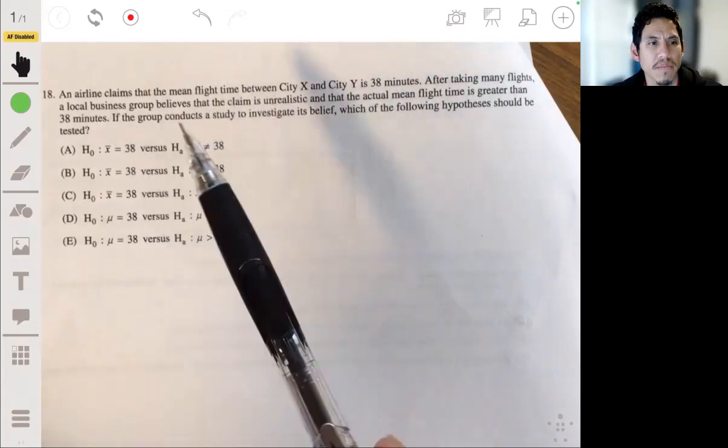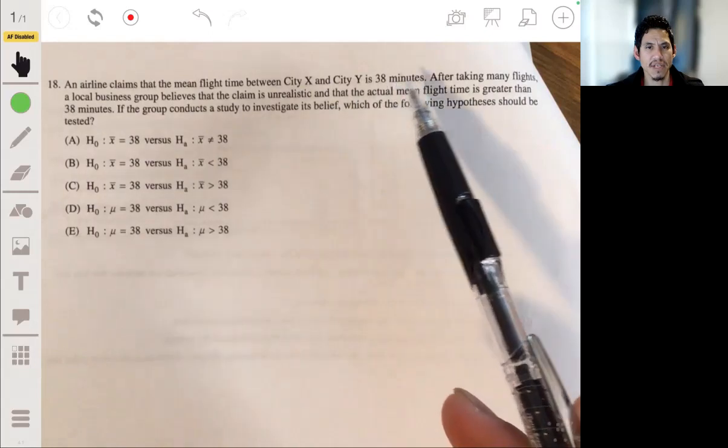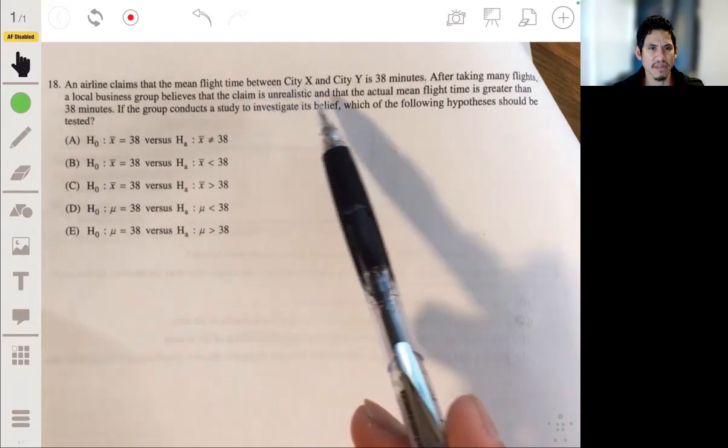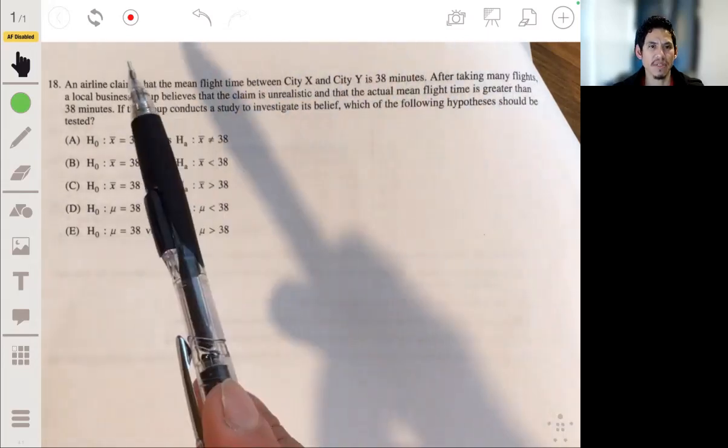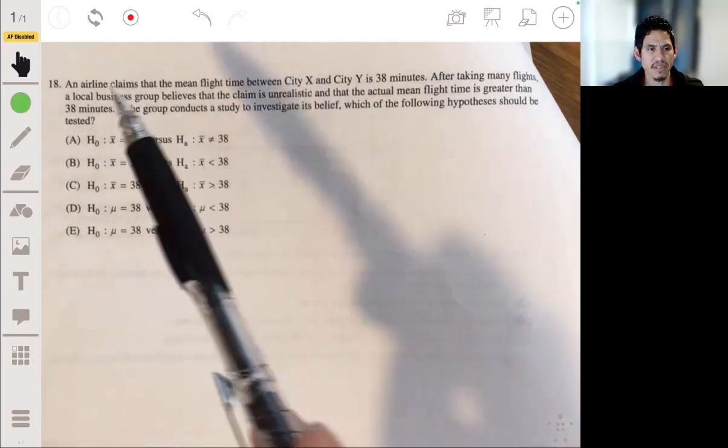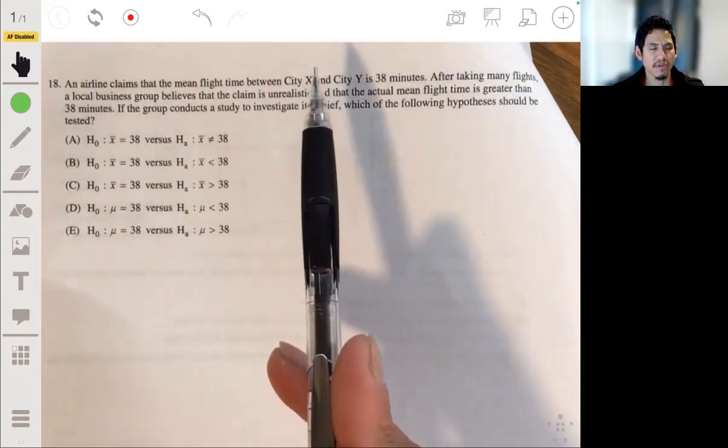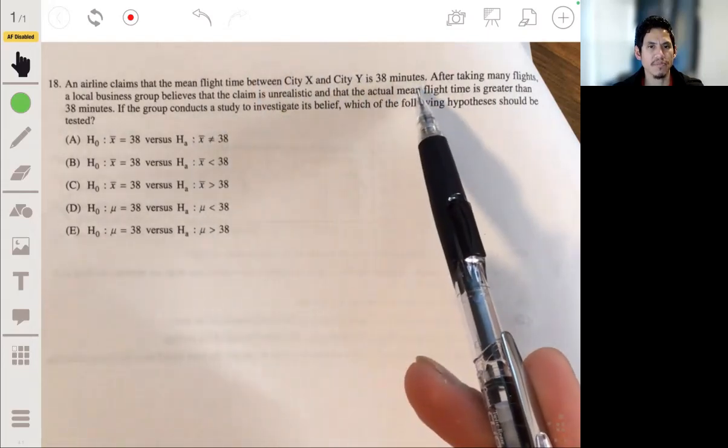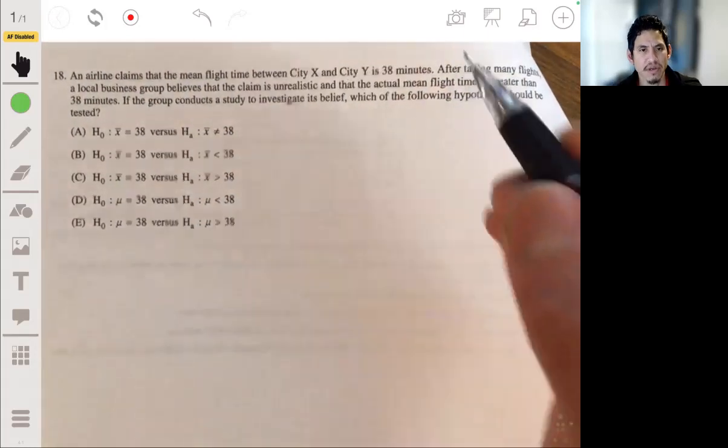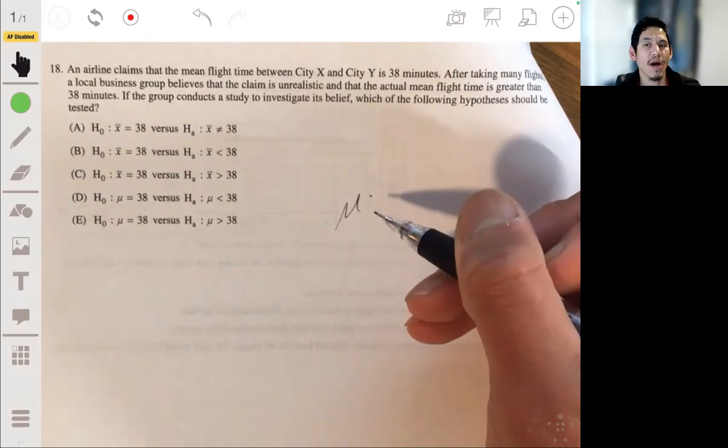Problem 18: An airline claims that the mean flight time between City X and City Y is 38 minutes. After taking many flights, a local business group believes that the claim is unrealistic and that the actual mean flight time is greater than 38 minutes. If the group conducts a study to investigate the belief, which of the following hypotheses should be tested? Okay, so we're looking at means.